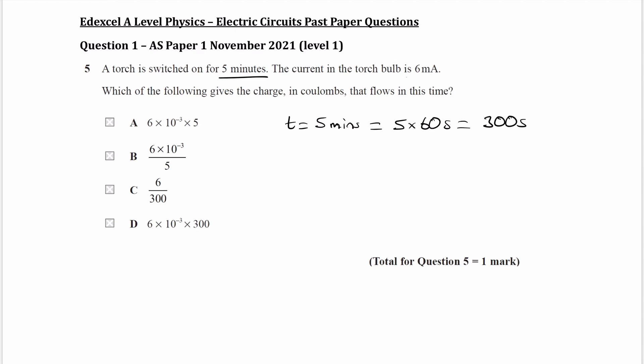And then we're told the current as well. The current in the torch is 6 milliamps. So that's i, i is equal to 6 milliamps, which is the same thing as 0.006 or 6 times 10 to the minus 3.